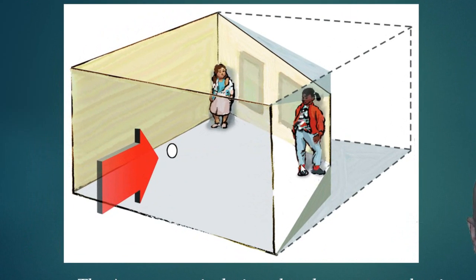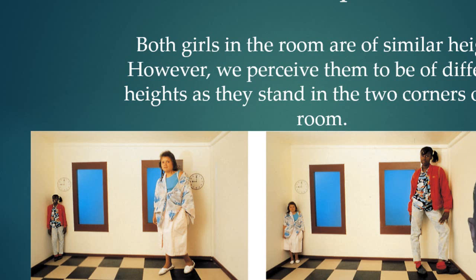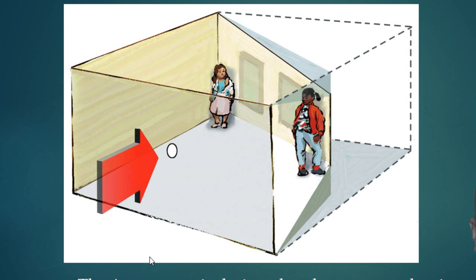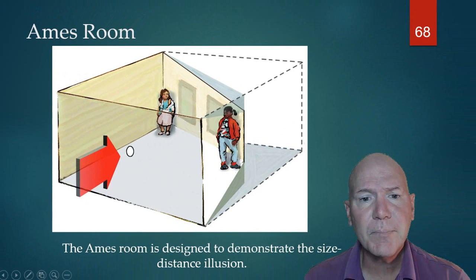You can see the floor raises, so we assume this person's farther away. They change the window, they move the decor, the tiles on the floor are actually different. Even though our brain perceives it the same, when we look through here we think it's the same room because our brain has seen so many rooms that this situation will fool our brains.